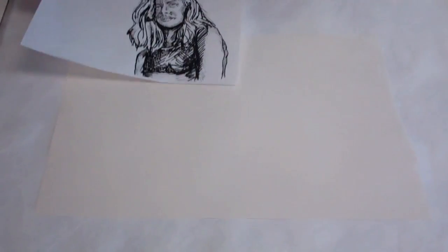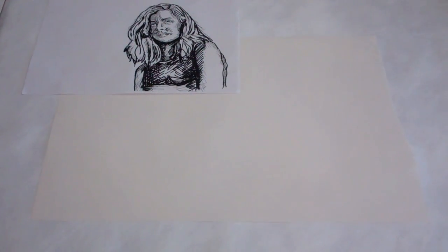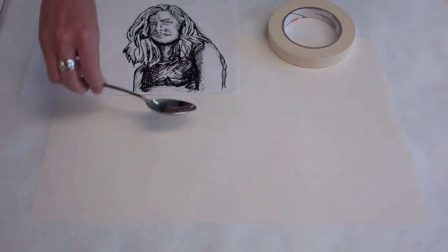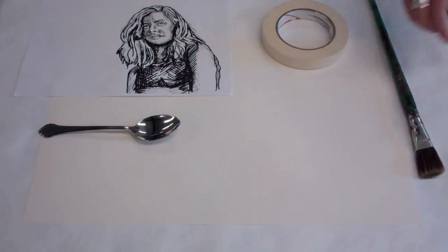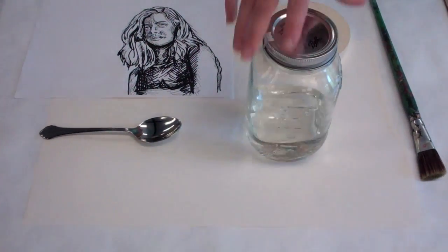Making an acetone transfer at home is really simple. All you need is a sheet of blank paper, a Xeroxed copy of an image or photograph, a roll of masking tape, a spoon to burnish your image, a paintbrush, and acetone.